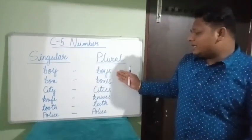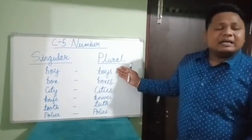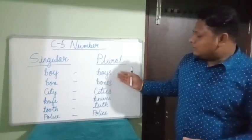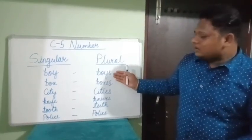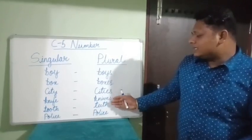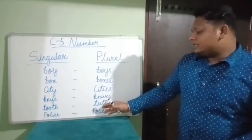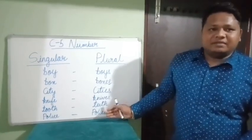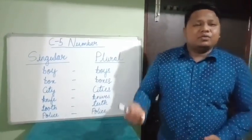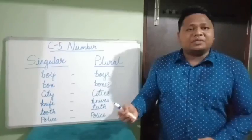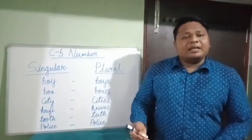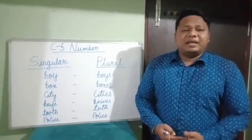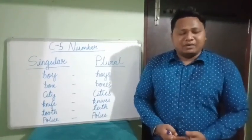Here we have used S, ES, then again ES, then VES, then double E, and then the same form repeated. So is there any rule for making the plural of singular nouns? Yes, there are some rules. By using those rules, we can make the plural of singular nouns.